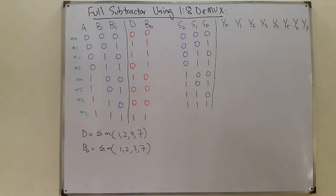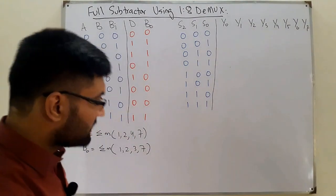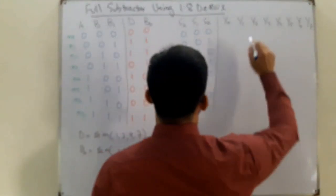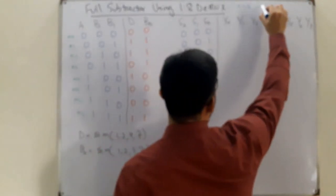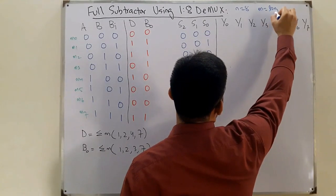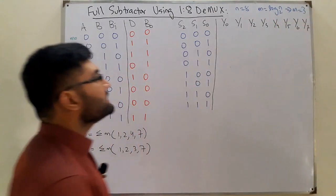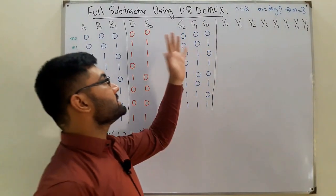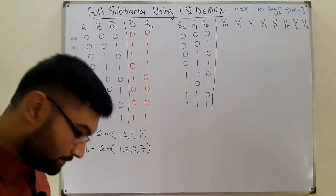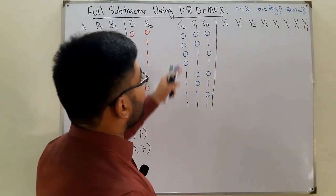Those are the minterms that are high. Now moving to the demultiplexer: N is equal to 8, which means the number of outputs is 8. M equals log base 2 of N, which gives M equal to 3 — so the number of select lines is 3, denoted S2, S1, and S0.